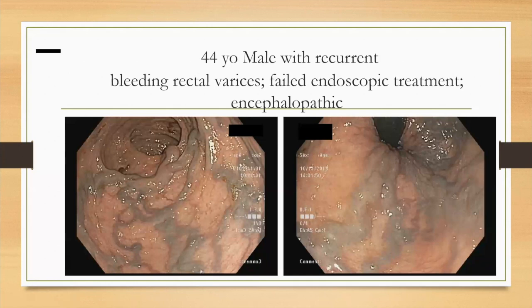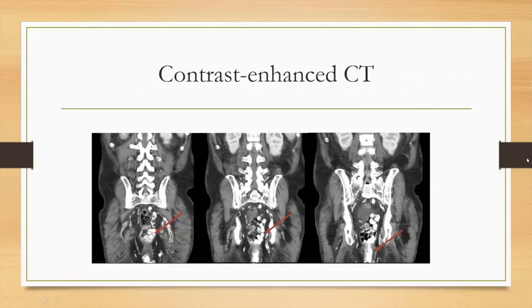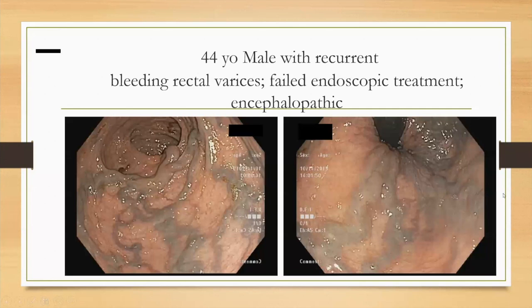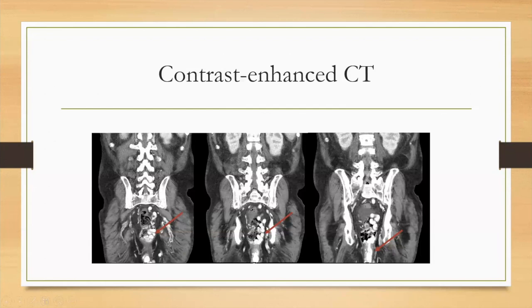This is a young man with cirrhosis who had recurrent bleeding rectal varices with prior failed endoscopic treatment and underlying hepatic encephalopathy. Here is a picture of his varices in the rectal region. Looking at the CT, you can appreciate the full extent of his varices sitting on the outside of the rectal wall — things the endoscopist would not be able to see with direct visualization. This illustrates why endoscopic treatment can fail: if you're injecting along the mucosa, you can see how much you're missing on imaging and why management can eventually fail.